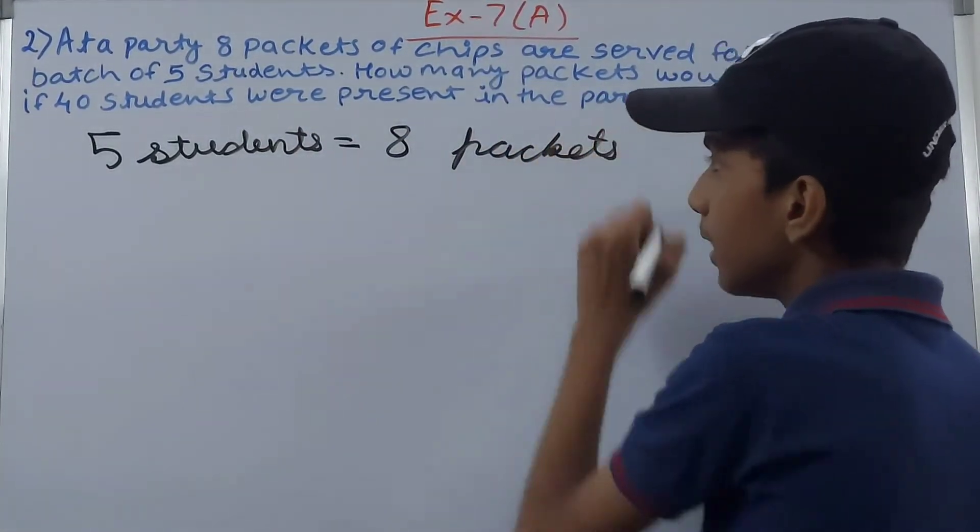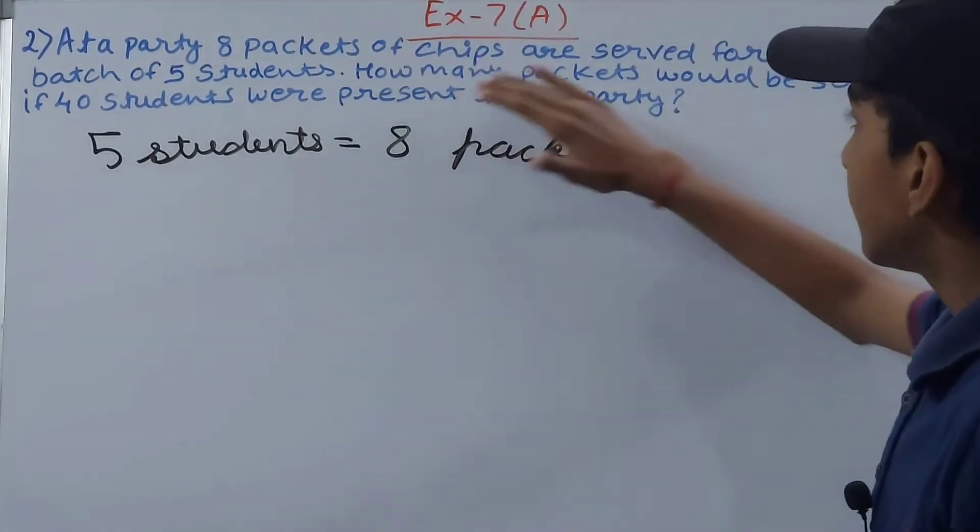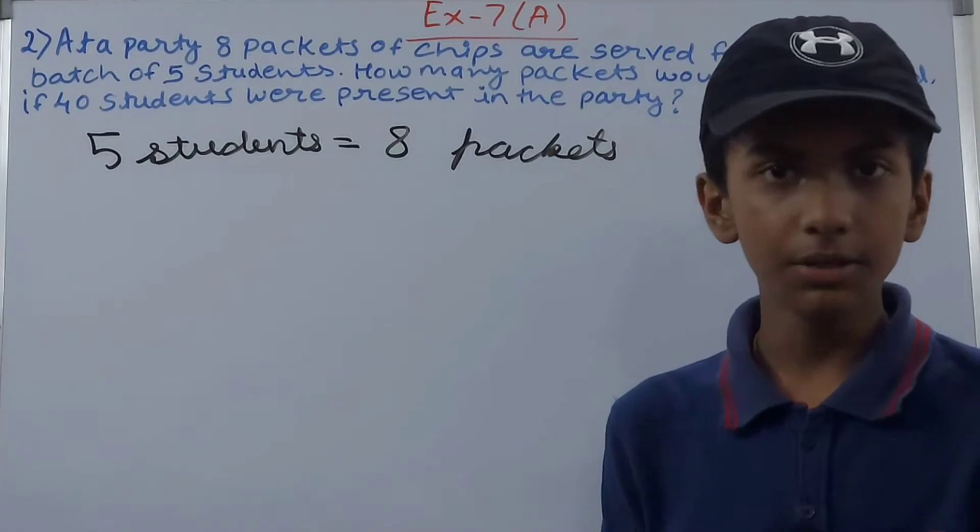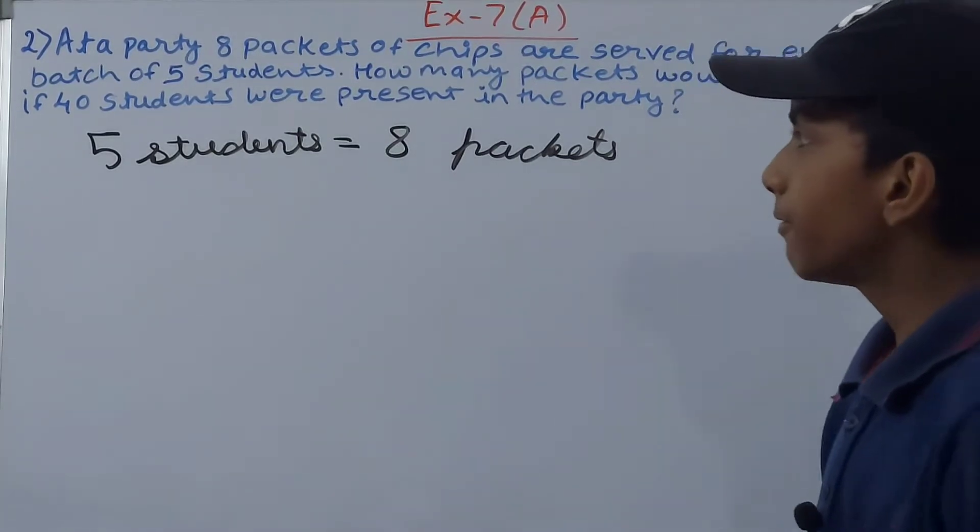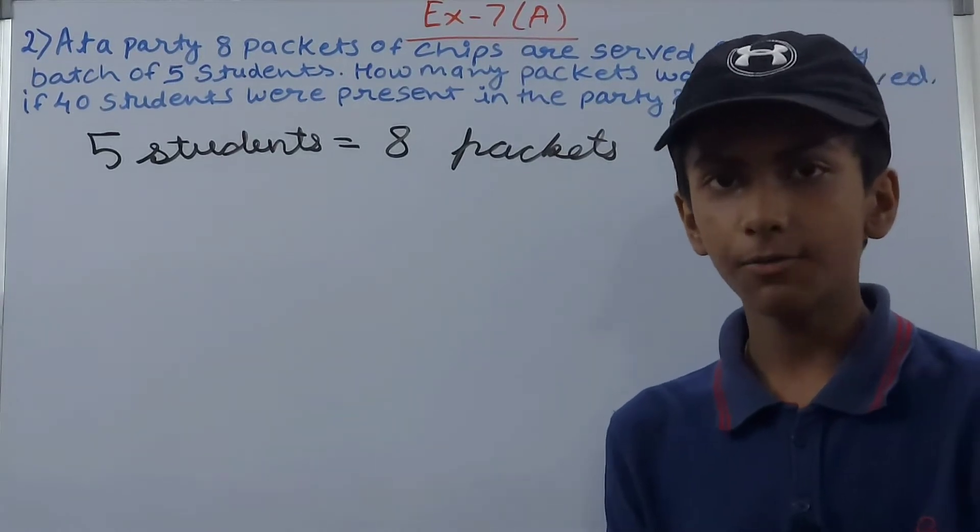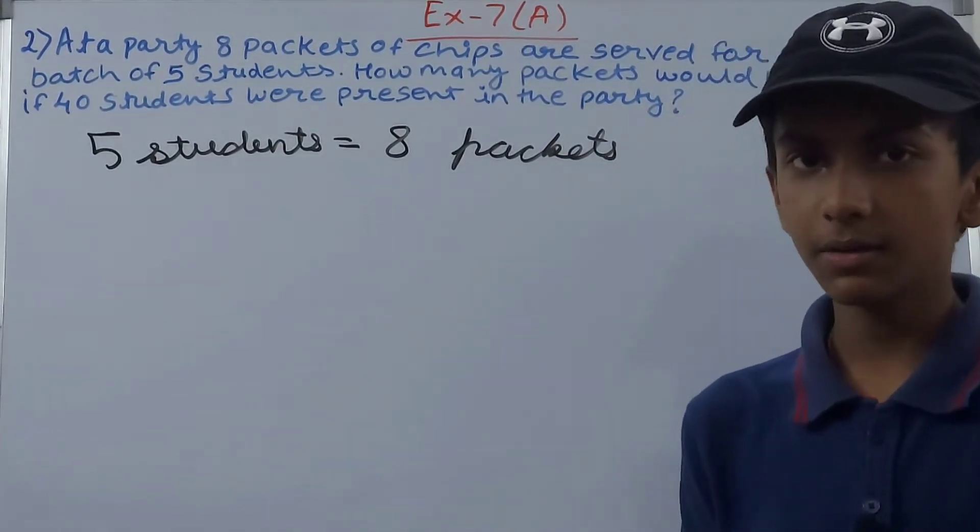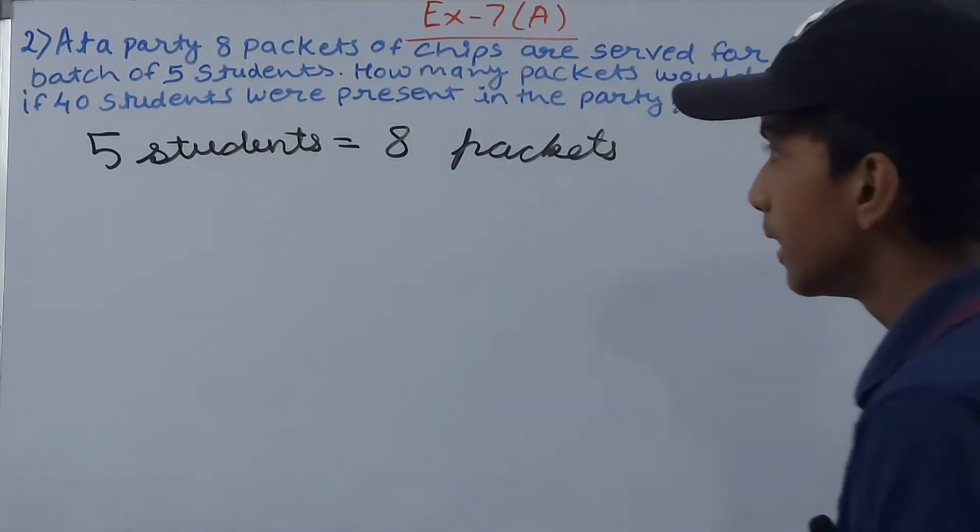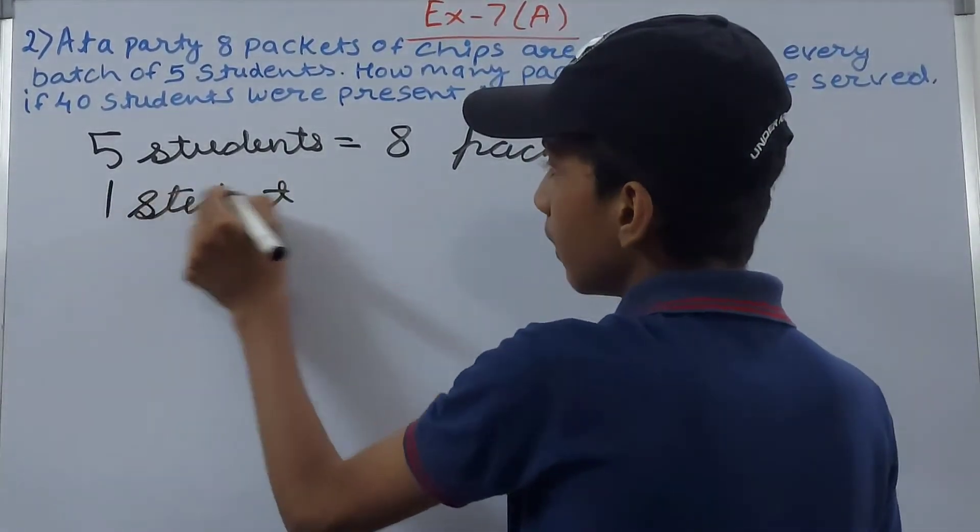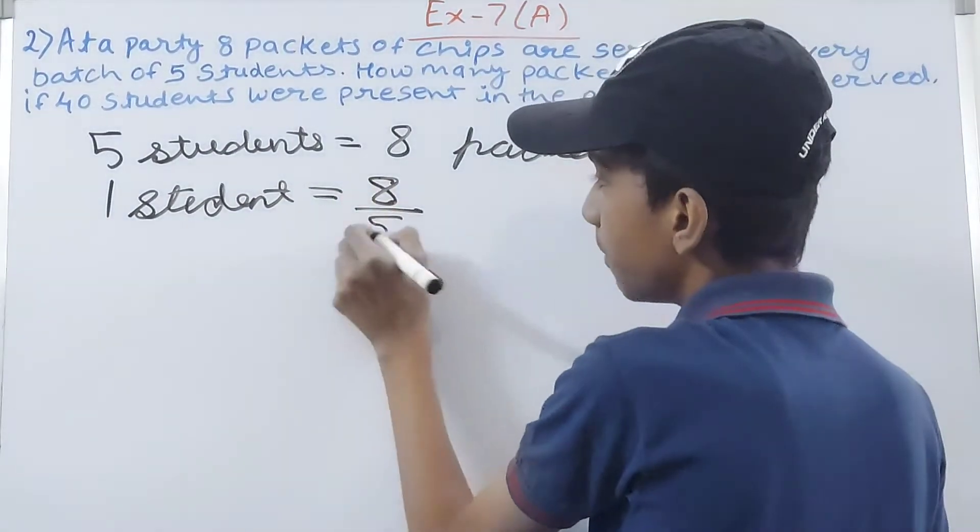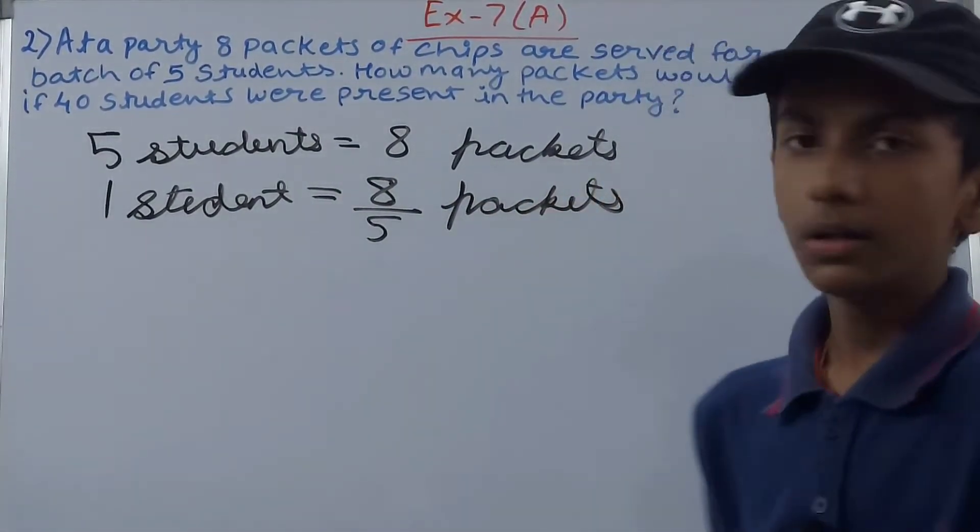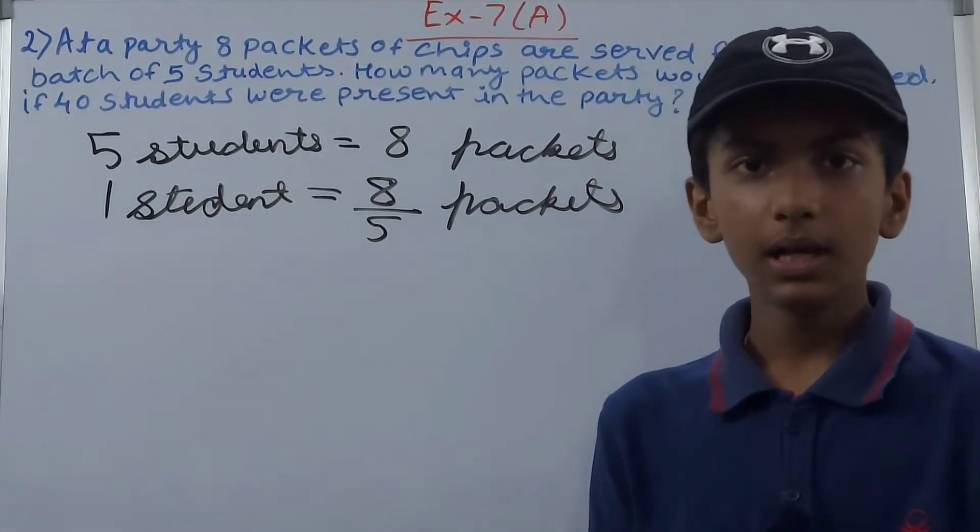Now it says that how many packets will be required if 40 students are present in the party. So you see here that five students get eight packets, so one student will get of course less number of packets. Why will they give more to just one child? So you write here that one student will get 8 upon 5 packets.